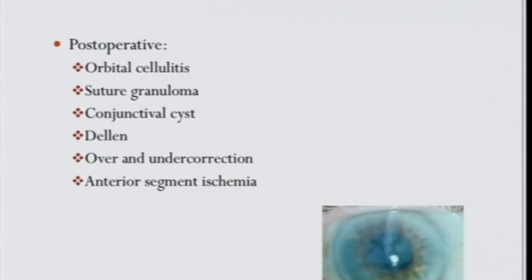Over- and under-corrections are unpredictable — one millimeter of shift in one child may differ from another, even within the same family. Always inform parents to be prepared for a second surgery, and when doing a second surgery, to be prepared for a third, and so on. I have operated on a couple of patients as many as five times. Anterior segment ischemia is a very rare complication.